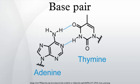The larger nucleobases, adenine and guanine, are members of a class of double-ringed chemical structures called purines. The smaller nucleobases, cytosine and thymine, are members of a class of single-ringed chemical structures called pyrimidines. Purines are complementary only with pyrimidines. Pyrimidine-pyrimidine pairings are energetically unfavorable because the molecules are too far apart for hydrogen bonding to be established. Purine-purine pairings are energetically unfavorable because the molecules are too close, leading to overlap repulsion. Purine-pyrimidine base pairing of AT or GC results in proper duplex structure.